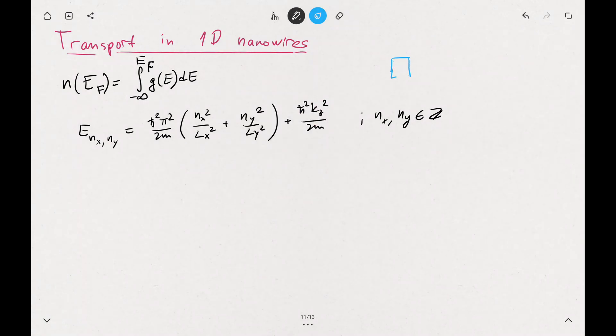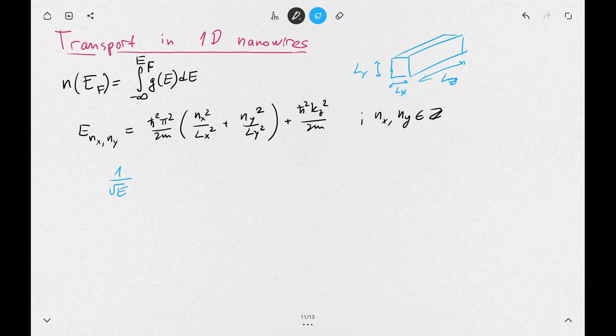And then we draw this nanowire. This is our quantized dimensions, Lx and Ly. This will be Lz. We previously calculated the density of states. There will be the sum of 1 over square root of E spikes. So the density of states is proportional to 1 over square root, and as a function of energy, your density of states would look like some sort of spikes every time you hit some of those modes.